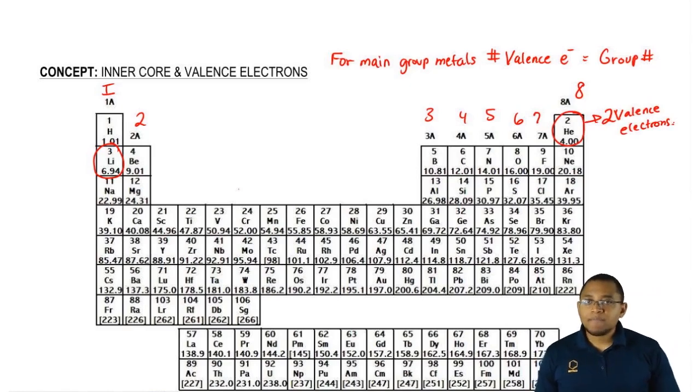So that's just for main metals. Now we know that the periodic table is not made up of only main metals. The periodic table is also made up of transition metals.